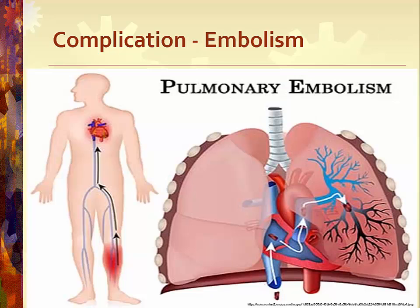Another complication is an embolism, which can occur secondary to catheter breakage, dislodgement of a thrombus, or entry of air into the circulation. Clinical symptoms include chest pain, respiratory distress, hypotension, and tachycardia. A preventive measure to avoid air embolism is to clear all air from the tubing before attaching it to the patient.